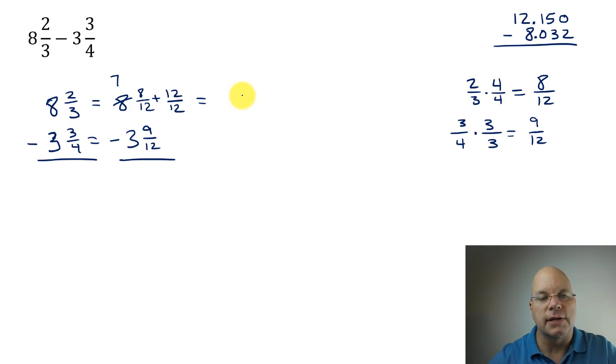So now I can rewrite this again as 7 and 8/12 plus 12/12 is 20/12. And from that I'm going to subtract 3 and 9/12. Now we have twelfths in this column and we have wholes in this column, and so we can subtract. 20/12 minus 9/12 is 11/12, and seven minus three is four. 11/12 cannot be simplified, so we're done.